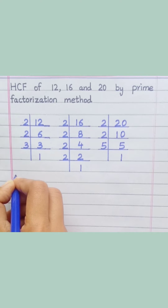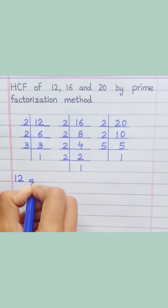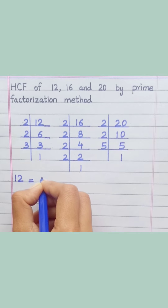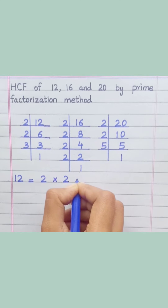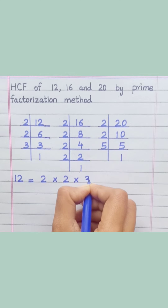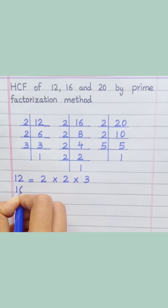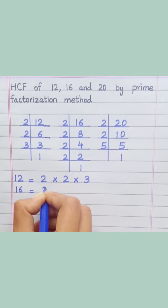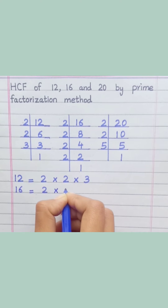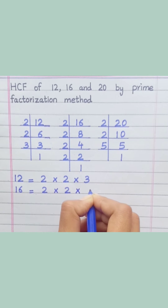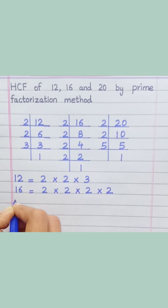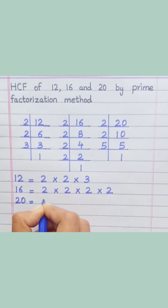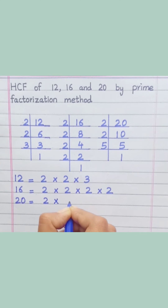12 equals 2 multiply 2 multiply 3. 16 equals 2 multiply 2 multiply 2 multiply 2. 20 equals 2 multiply 2 multiply 5.